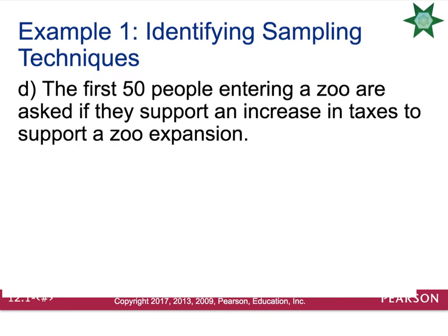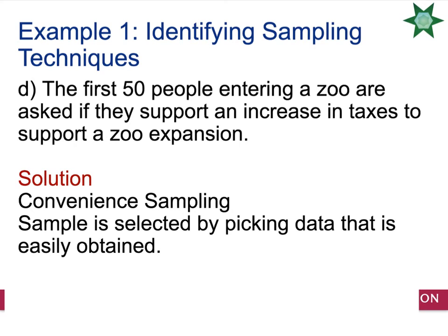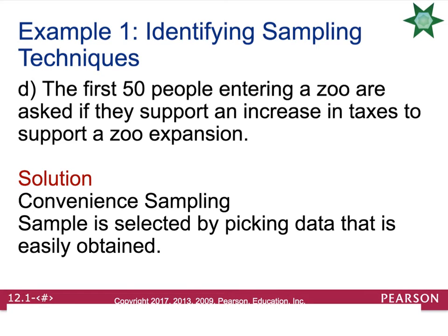The first 50 people entering a zoo are asked if they support an increase in taxes to support a zoo expansion. This is going to be a convenience sample. You're asking people who enjoy the zoo whether we should increase taxes for the zoo, so your data is going to be extremely biased and not accurate to the actual opinion of the population.